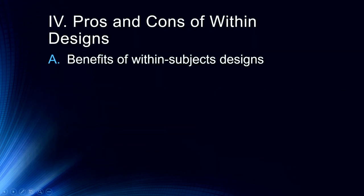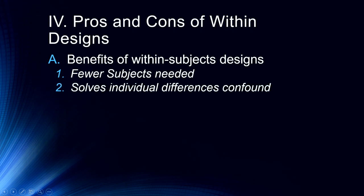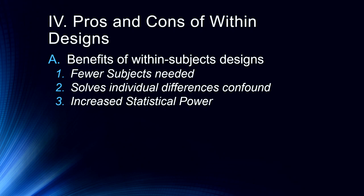Let's run through the pros and cons of within-subjects designs. Benefits: fewer participants are needed since everything is done within-subjects. It solves the problem of individual differences — with one group we don't worry about gender ratios, education levels, or other participant variables. Finally, we get better statistical power because we can account for the shared variance between measurements that is associated with the individuals.